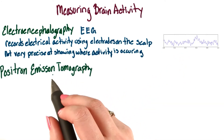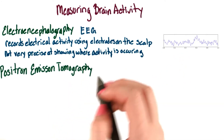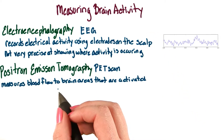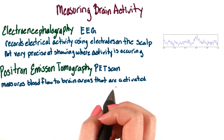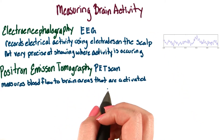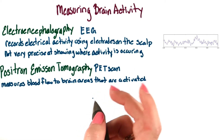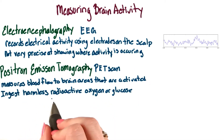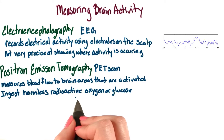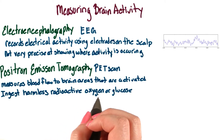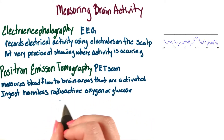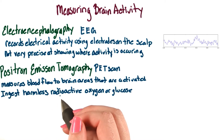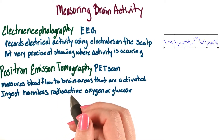Next, we have the positron emission tomography, or PET scan for short. This measures blood flow to brain areas that are activated because neural response requires blood. This technology requires a person to ingest a harmless radioactive form of oxygen or glucose, which is then picked up by the scanning device during brain activity.